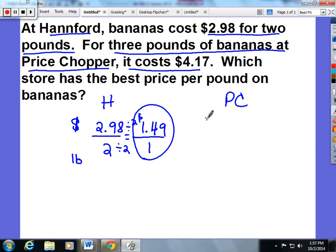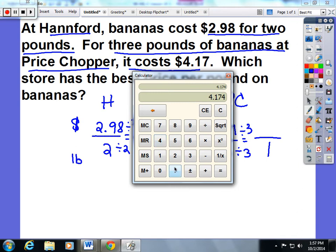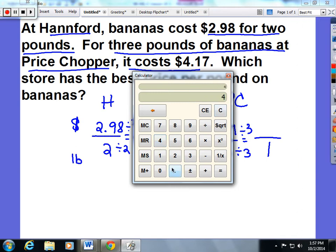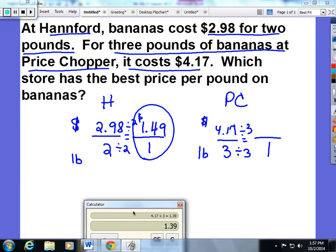At Price Chopper, we're going to set up the same equivalent ratios here. We're going to compare pounds and money. For $4.17 at Price Chopper, you're getting 3 pounds of bananas, and we want to scale that down to 1. So I'm going to divide that by 3, divide this by 3. When I divide $4.17 by 3, I'm going to get $1.39 per pound.